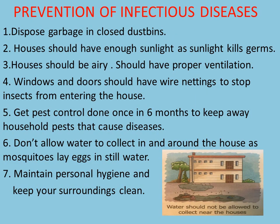Prevention of infectious diseases. Dispose garbage in closed dustbins. Houses should have enough sunlight as sunlight kills germs. Houses should be airy and have proper ventilation. Windows and doors should have wire nettings to stop insects from entering the house. Get pest control done once in six months to keep away household pests that cause diseases. Don't allow water to collect in and around the house as mosquitoes lay eggs in still water. Maintain personal hygiene and keep your surroundings clean.